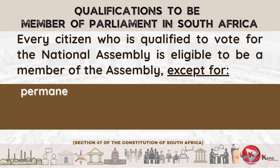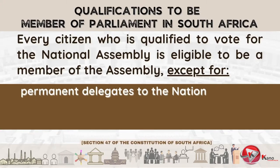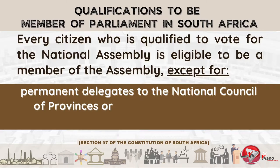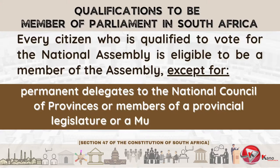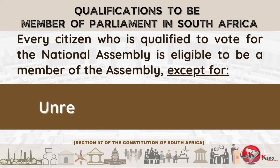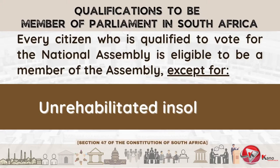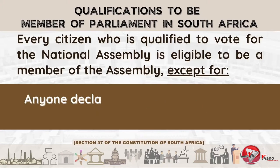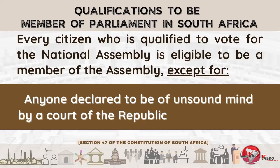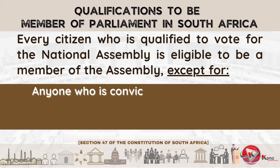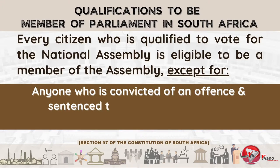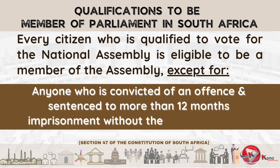The list of people not qualified to be members of the National Assembly also includes permanent delegates to the National Council of Provinces, or members of a provincial legislature, or members of a Municipal Council. Also excluded is anyone considered an unrehabilitated insolvent, or anyone declared to be of unsound mind by a South African court, as well as anyone who is convicted of an offence and sentenced to more than twelve months' imprisonment without the option of a fine, either in South Africa or outside South Africa, if such conduct would have been an offence in South Africa.